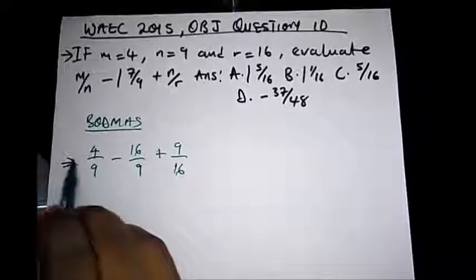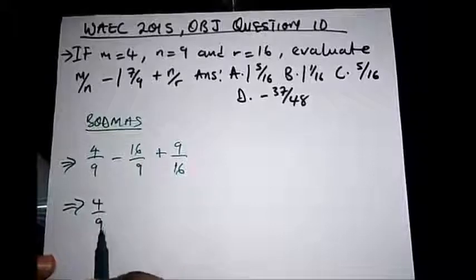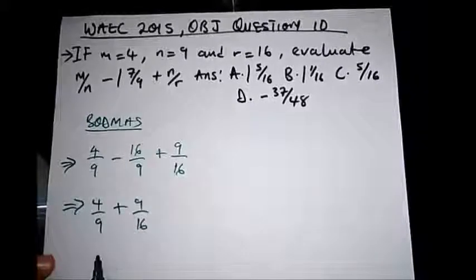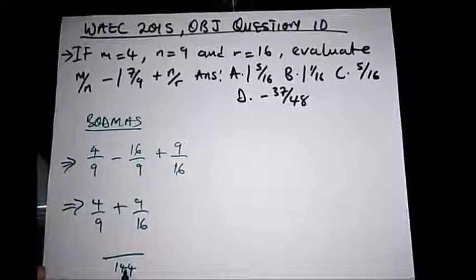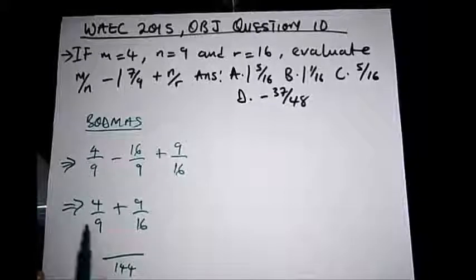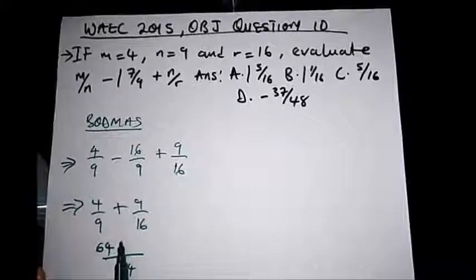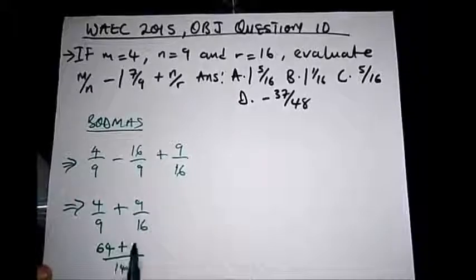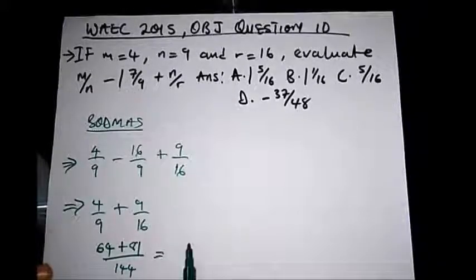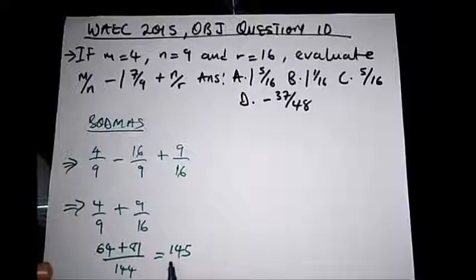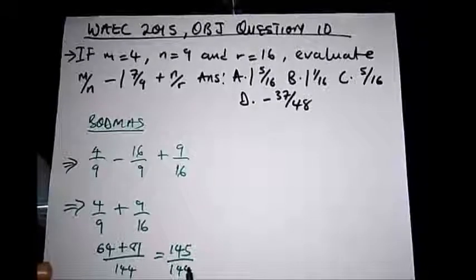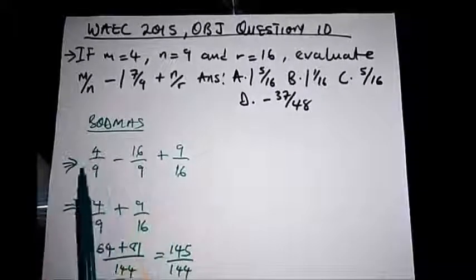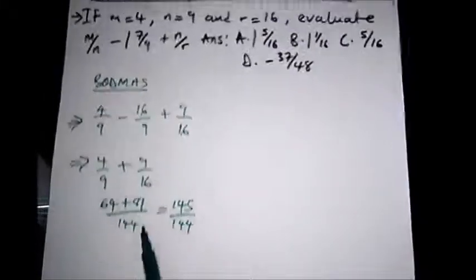We perform addition first on these two fractions: 4 over 9 plus 9 over 16. The LCM of 9 and 16 is 144. 16 goes into 144 nine times — 9 times 4 is 36... actually: 9 goes into 144 sixteen times — 16 times 4 is 64. 16 goes into 144 nine times — 9 times 9 is 81. Adding 64 plus 81 gives 145 over 144.